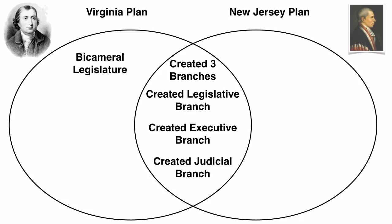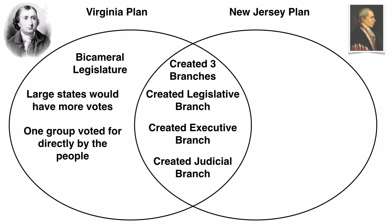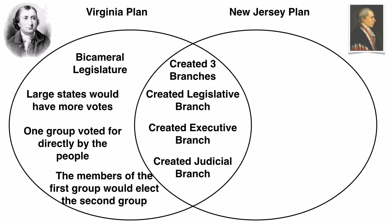The Virginia Plan called for a bicameral legislature — meaning the lawmaking body was made up of two different groups of people. They also believed that large states should have more votes than small states: the bigger the state by population, the more powerful it is. They believed the House of Representatives should be voted for directly by the people, and that members of the Senate should be elected by the House. So the people would select one group, and that group would select the second.